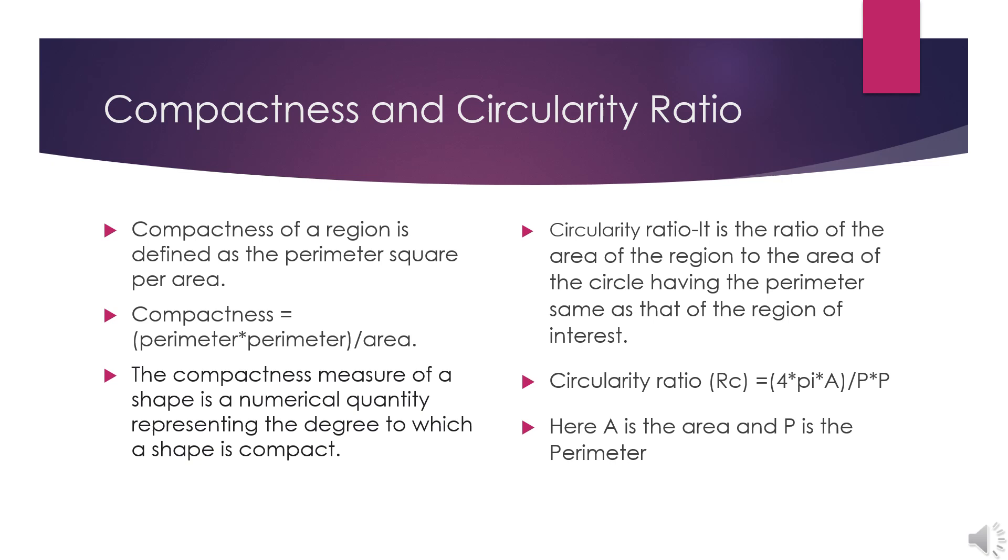Compactness and circularity ratio. Compactness of a region is defined as the perimeter squared per area. The compactness measure of a shape is a numerical quantity representing the degree to which the shape is compact.